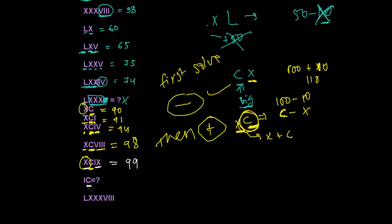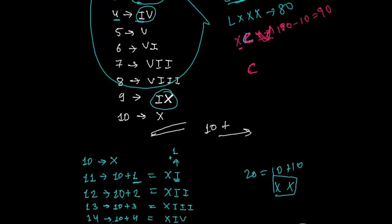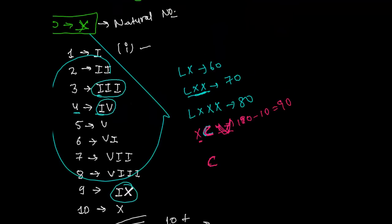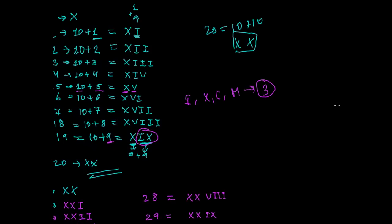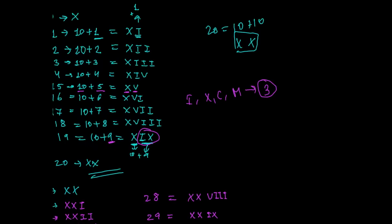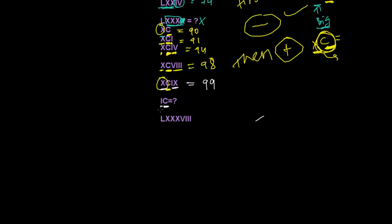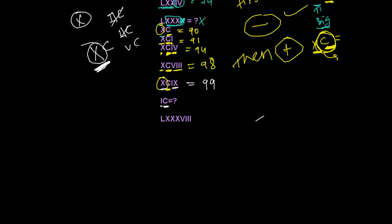C means 100, and in front of 100 can we write I? No, we cannot. Before C you can only place X — only one symbol is allowed before C and that is X, representing 10. You cannot write I before C, you cannot write anything before L or C other than what the rules allow.